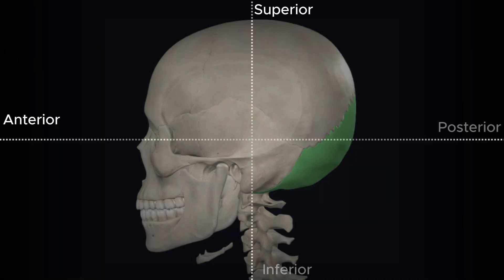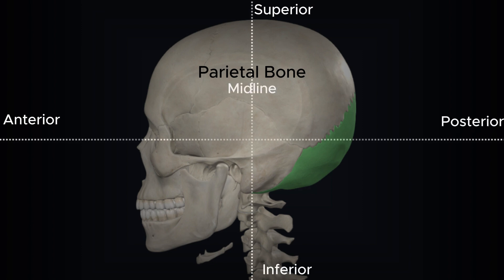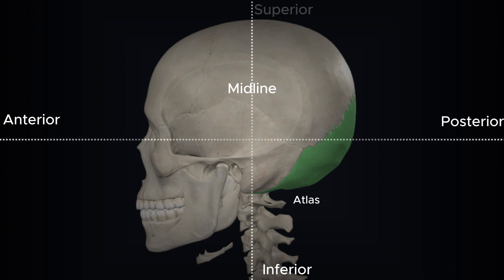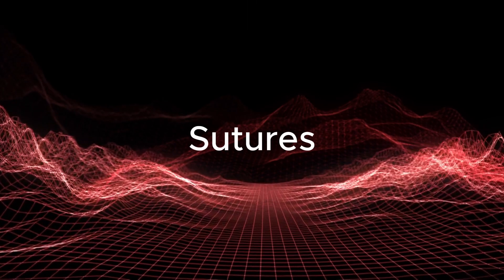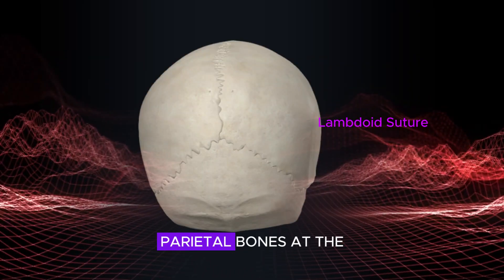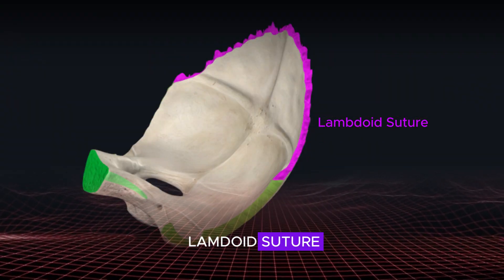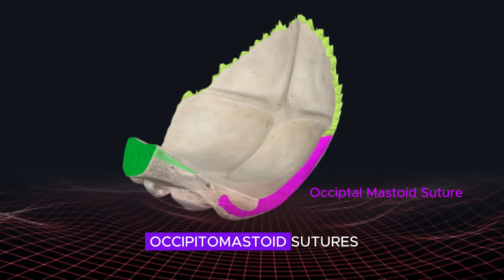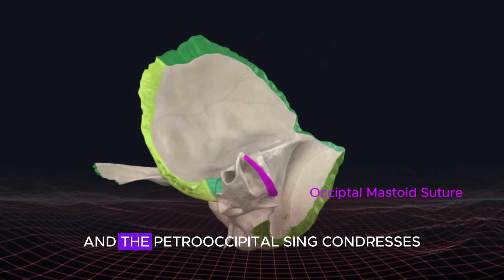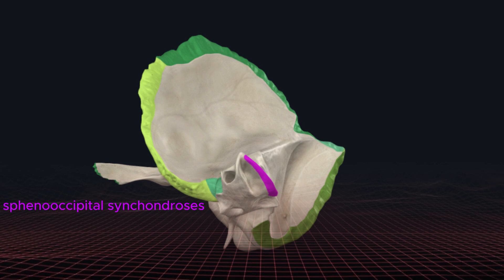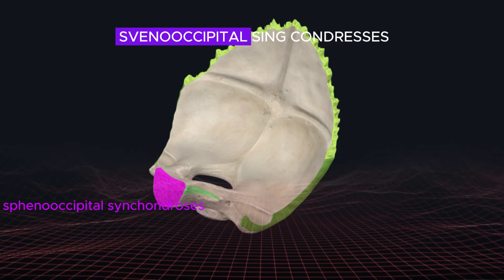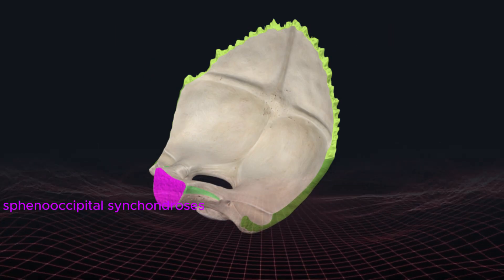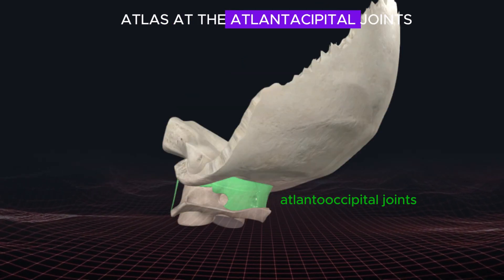The occipital bone is located postero-inferior to the parietal bones, posteromedial to the temporal bones, superior to the sphenoid bone, and superior to the atlas (first cervical vertebra). It articulates with the parietal bones at the lambdoid suture, temporal bones at the occipital mastoid sutures and the petro-occipital synchondroses, the sphenoid bone at the sphenooccipital synchondrosis, and the atlas at the atlantooccipital joints.